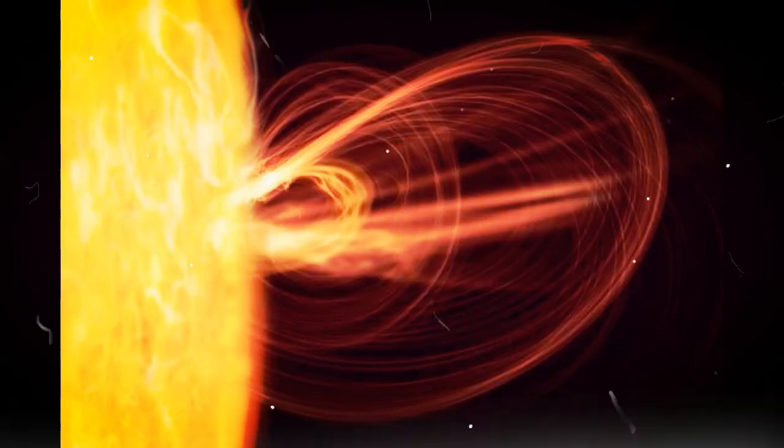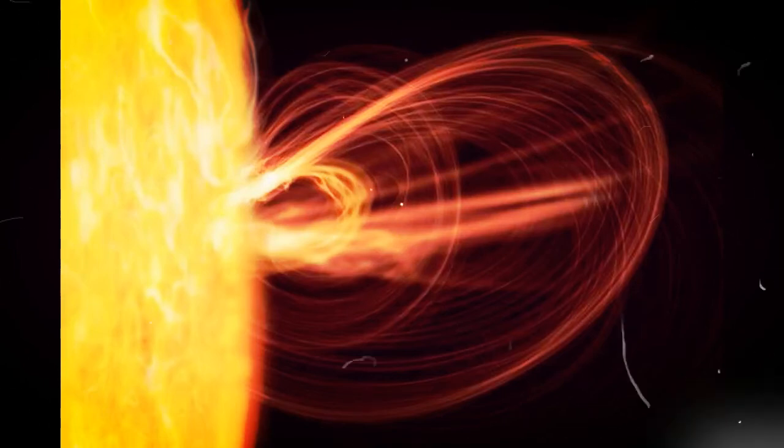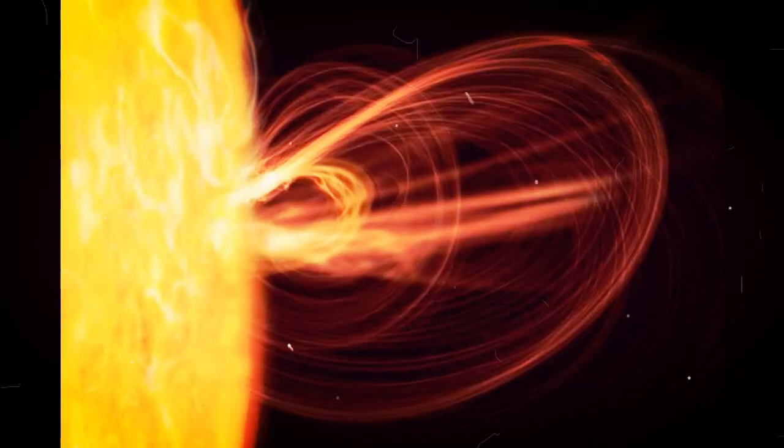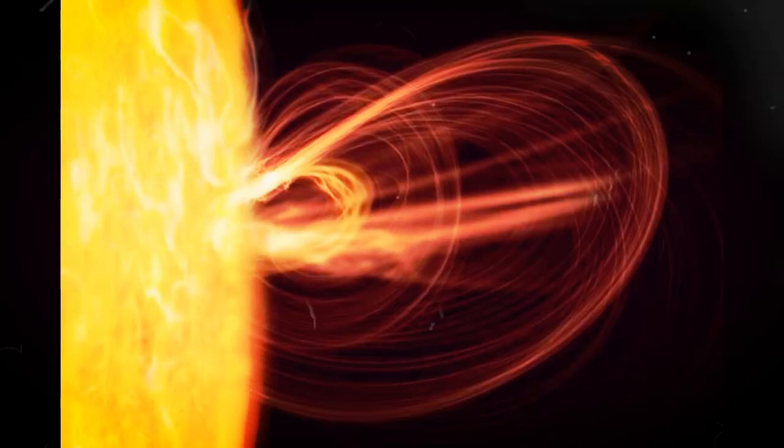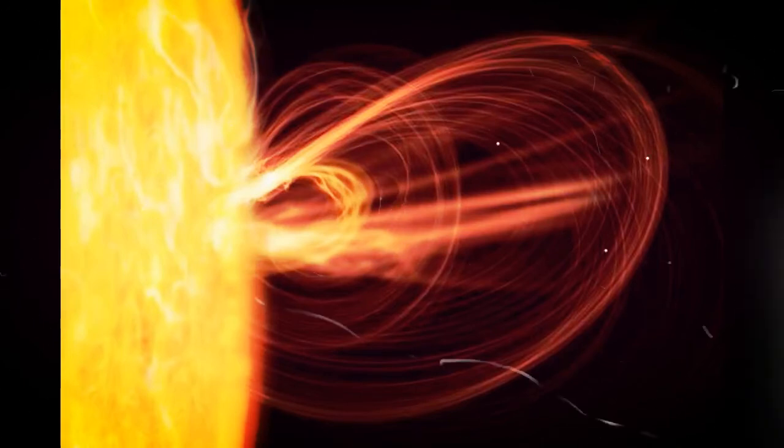These solar flares send huge amounts of radiation out into the solar system and can stretch as far as Earth, potentially knocking out our radio signals for momentary periods.